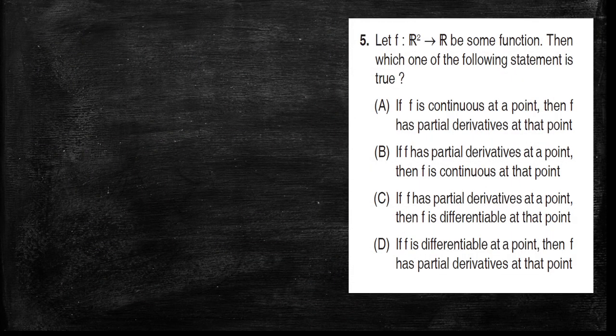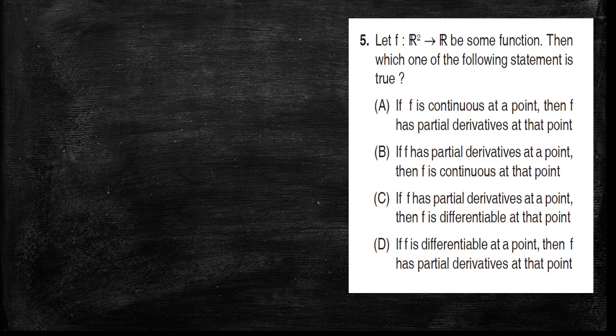Coming to the 5th question. Let f from R² to R be a function. Which of the following statements are true? Option A: if f is continuous at a point, then f has a partial derivative at that point. Option B: if f has a partial derivative at a point, then f is continuous at that point. Option C: if f has a partial derivative at a point, then f is differentiable at that point. Option D: if f is differentiable at a point, then f has a partial derivative at that point.